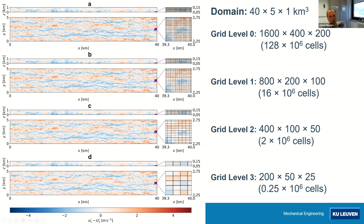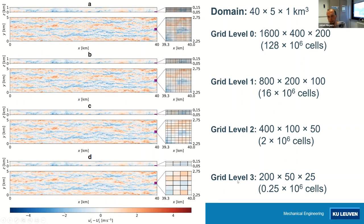Obviously this fine-scale LES is way too expensive for real-time control, but you can make LES much cheaper by coarsening the grid. We have a second grid level where we coarsen by a factor of two in each direction, then a third level coarsening again by two, and a fourth level again by two. Essentially grid level three has about 250,000 cells instead of 128 million. Coarsening by a factor of two in each direction reduces the computational cost by a factor of 16.